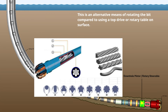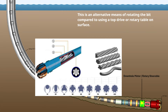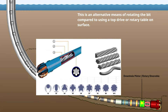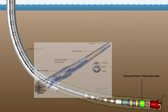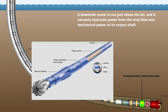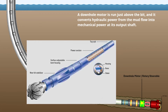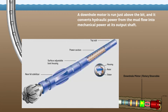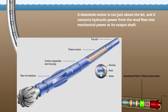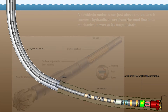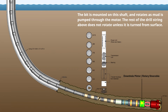A downhole motor is an alternative means of rotating the bit compared to using a top drive or rotary table on surface. A downhole motor is run just above the bit and converts hydraulic power from the mud flow into mechanical power at its output shaft. The bit is mounted on this shaft and rotates as mud is pumped through the motor. The rest of the drill string above does not rotate unless turned from surface.